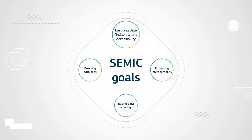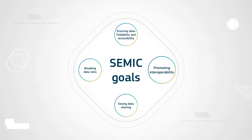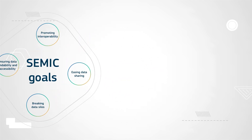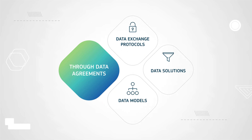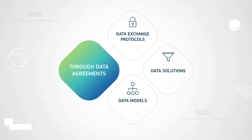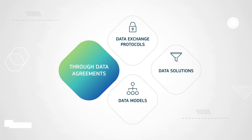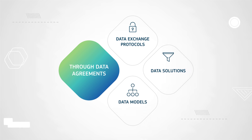These principles include ensuring data findability and accessibility, breaking down data silos, promoting interoperability for collaborative innovation, and easing data sharing — all of which are important goals for CEMIC. We can achieve these goals by establishing agreements on data exchange protocols, leveraging innovative data solutions and embracing key data models.